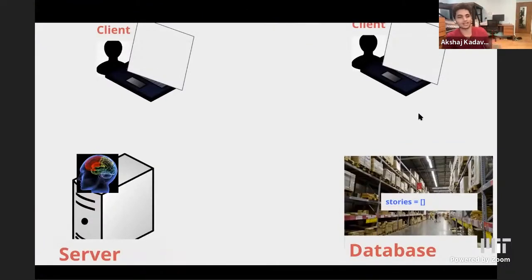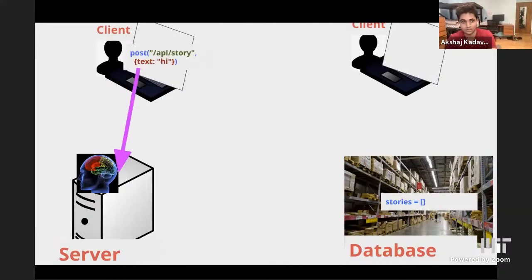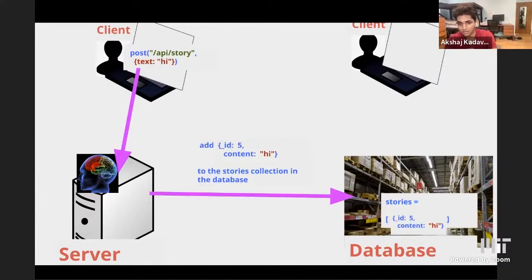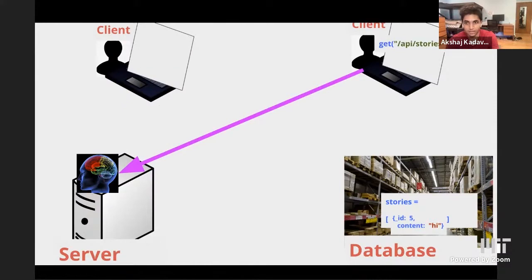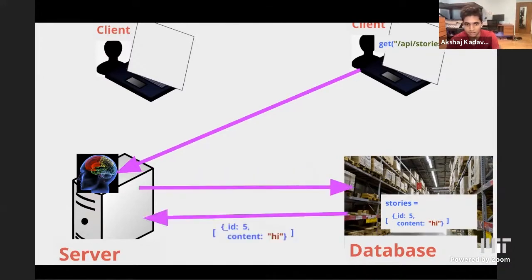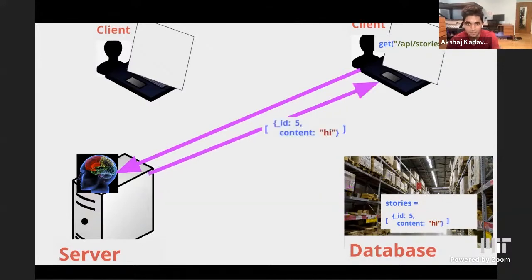To recap the diagram from earlier: now we store stories in the database. When we post a new story, the server goes to the database and says add the story into the warehouse — into the database — and on Atlas, the story shows up in the stories collection. Then if another client from across the world wants to get all the stories, the server goes to the warehouse, gets all the stories, and sends them back. All our data is safe and secure on MongoDB Atlas.